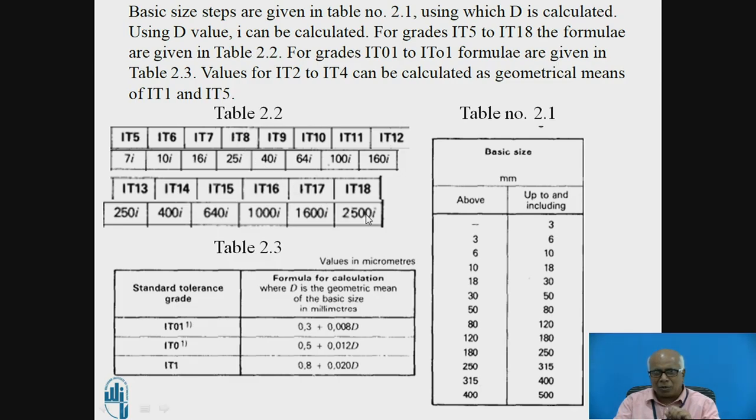Now this is for IT5 to IT18. For grades which are lower than IT5, there are different formulae. This table 2.3 gives the formulae for IT01, IT0 and IT1. So the formulae are like this 0.3 plus 0.008 D like this.